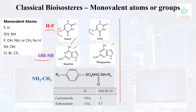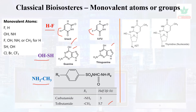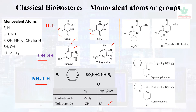The bioisosteric interchange of NH2 with CH3 gives rise to a more potent tolbutamide, which is an antidiabetic compound. Other examples include azidothymidine and thymidine, and diphenhydramine and carbinoxamine.